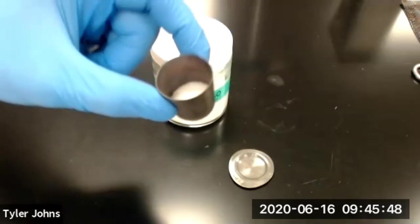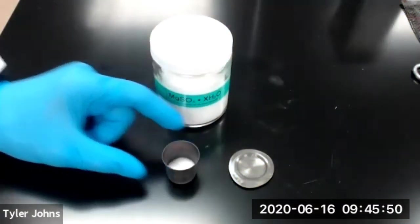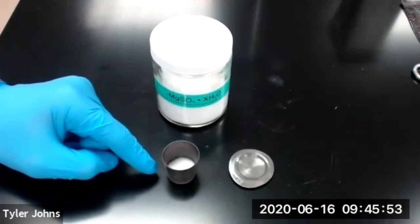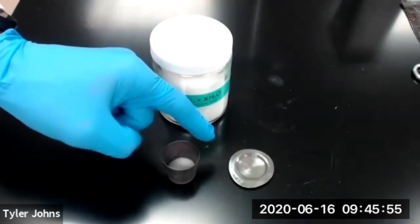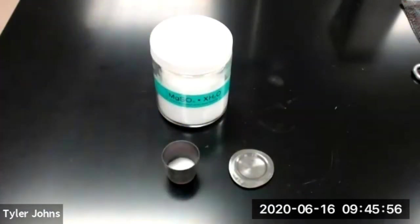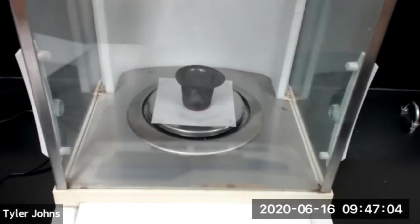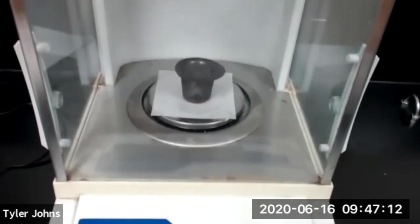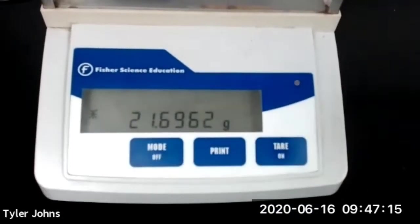So we're now going to determine the mass of the crucible with our magnesium sulfate and the crucible cover. The mass of our crucible cover and our magnesium sulfate with an unknown number of hydrates is 21.6962 grams.